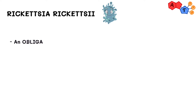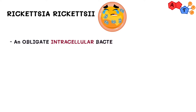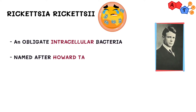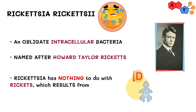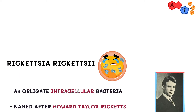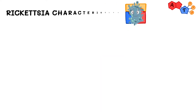Let us start with a brief introduction about rickettsia. Rickettsia is an obligate intracellular bacterium, which is named after Howard Taylor Ricketts, who identified the Rocky Mountain spotted fever outbreak in Montana. Despite the similar name, rickettsia bacteria has nothing to do with rickets, which is a result of vitamin D deficiency. Now let us move on and talk about its important features.